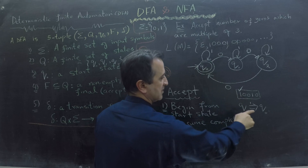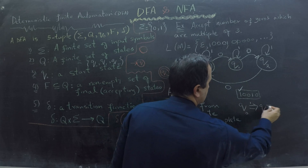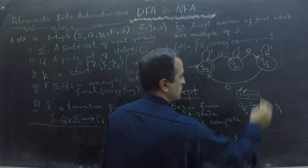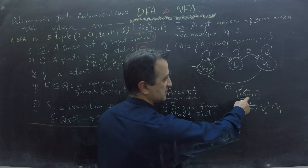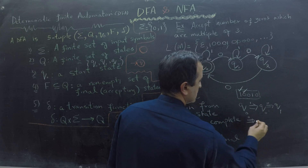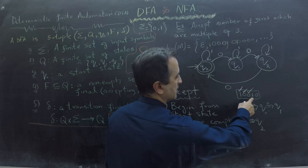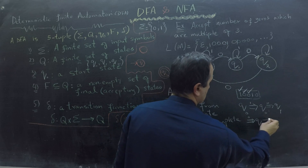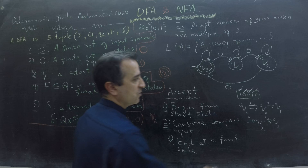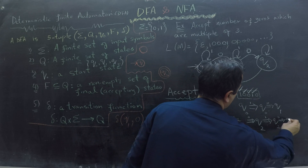For the next input 0, I am at Q0 and go to Q1. That 0 is consumed. For the following 0, I go to Q2. That 0 is consumed. For input 1 at Q2, I stay at Q2. That 1 is consumed. Finally, for the last 0, I move to Q0.